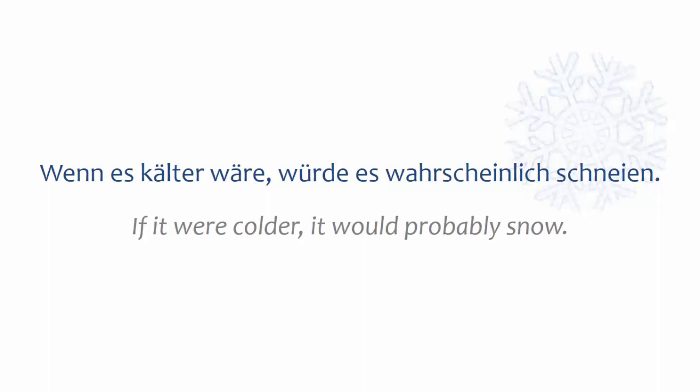The conditional is used to express hypothetical situations — something that could happen but hasn't yet happened, or something that might have happened in the past if circumstances had been different. One example is on your screen, where conditional is being used to express what might happen if a certain condition is met. The sentence suggests that it's not snowing now, but it might snow if the conditions were a little different. That is a hypothetical situation — counter to actual present reality.